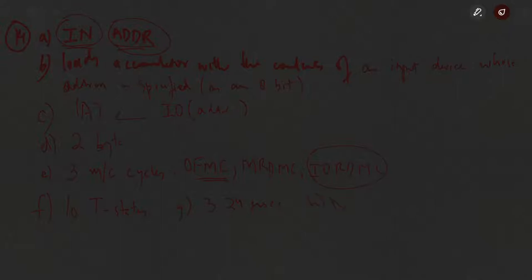The IO read machine cycle has 3 T-states, giving 4+3+3 = 10 T-states in total and an execution time of 3.24 microseconds. There are no variations. An example would be: IN 55H, where the address is 8 bits. No flag is affected.